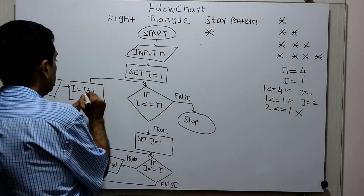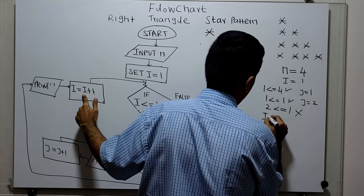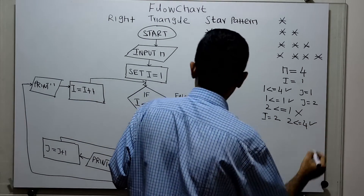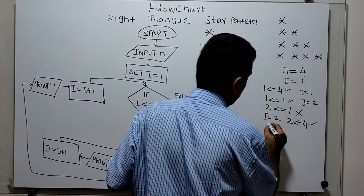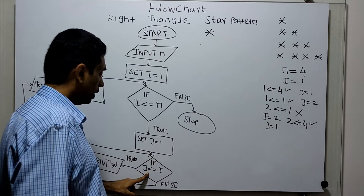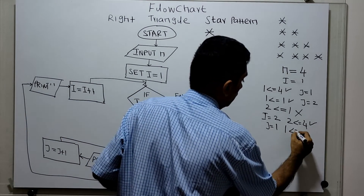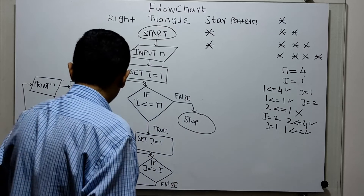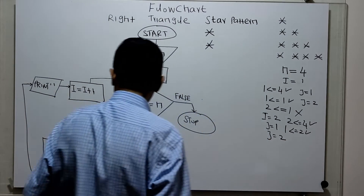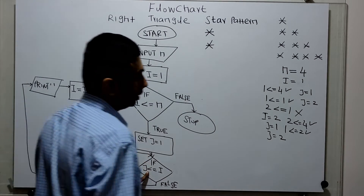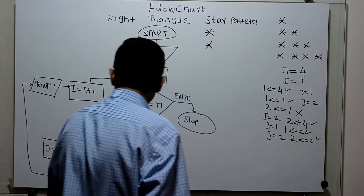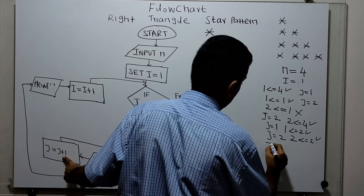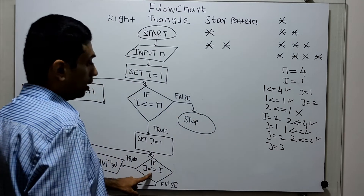So control moves to the empty print statement, and I increment i — i becomes 2. I check i less than or equal to n — 2 less than or equal to 4 is true. Initialize j equal to 1. Check j less than or equal to i — 1 less than or equal to 2 is true, print a star. j becomes 2; 2 less than or equal to 2 is true, print another star. j becomes 3; 3 less than or equal to 2 is false.